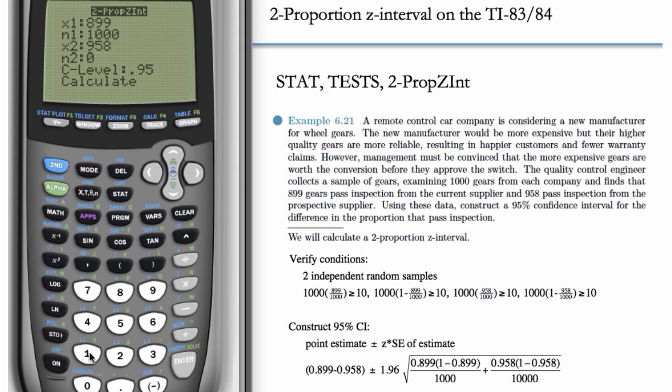N2 is going to be 1,000 as well. Our confidence level is 0.95, so we can leave that and do calculate. And now we get our interval here.